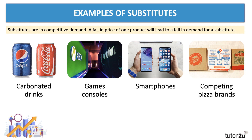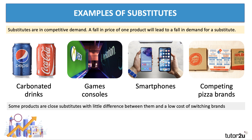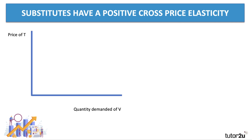A fall in the price of one product, other things being equal, will lead to a fall in demand for a substitute. Some products are close substitutes, others less so. A close substitute is often a very similar product with minimum differentiation between them, and often a low cost of switching if you want to change your spending. So substitutes have a positive cross price elasticity.